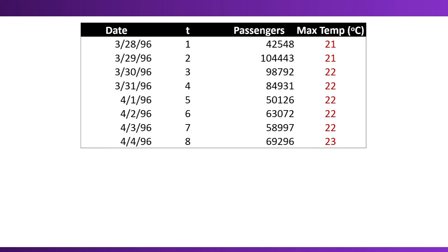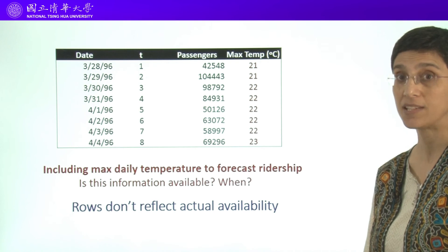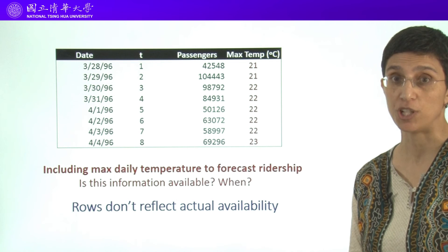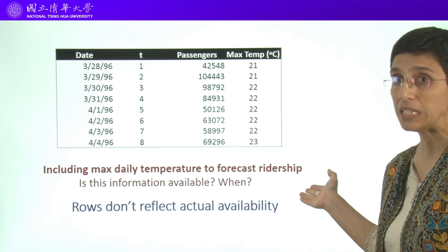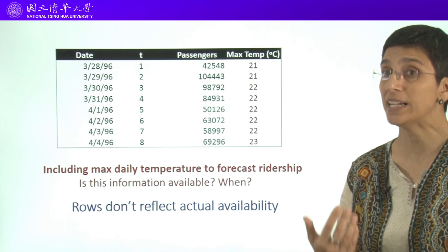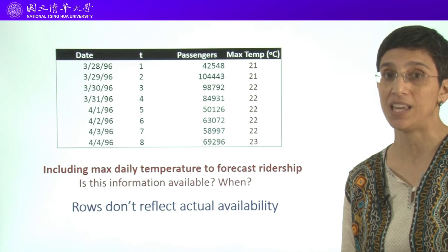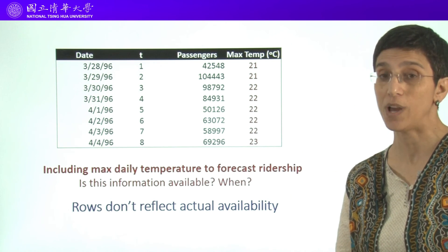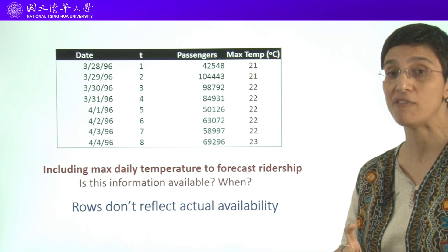Let's think about another example. Assume that in addition to the ridership data, we also collected the daily temperature — for example, the maximum temperature in Taipei. If I want to include this information in forecasting ridership, because temperature might affect the number of passengers on MRT, then I have to think carefully whether this information is actually going to be available at the time of prediction, and if so, when exactly. Are these the actual temperatures, or were these the forecasted weather temperatures? We have to think about the availability of both — obviously, I don't know the actual weather until the day happened, whereas a weather forecast might be available earlier, but then how much earlier?